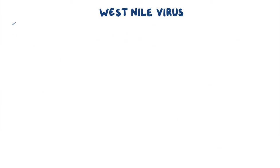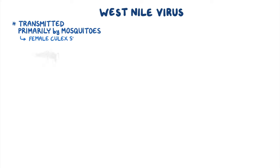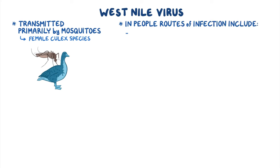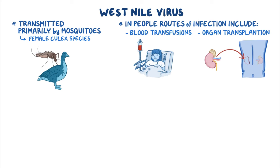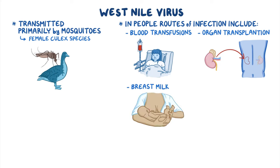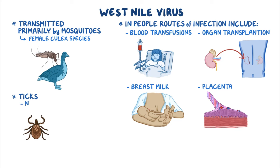West Nile virus is transmitted primarily by mosquitoes, most often the female Culex species, which usually feed on birds. In people, other routes of infection include blood transfusion, organ transplantation, passage through breast milk, and occasionally across the placenta. The virus has also been found in some tick species, but it's not known if they actually play a role in passing the virus to susceptible animals or people.